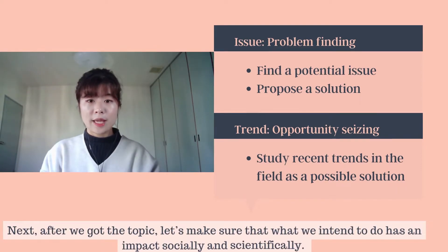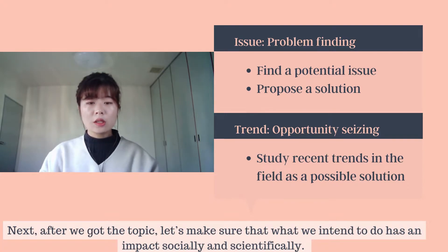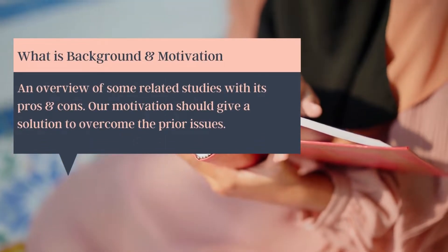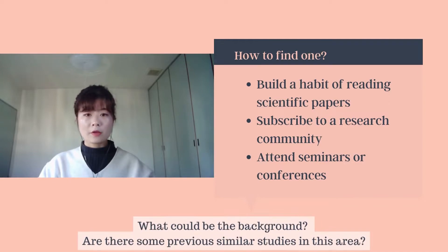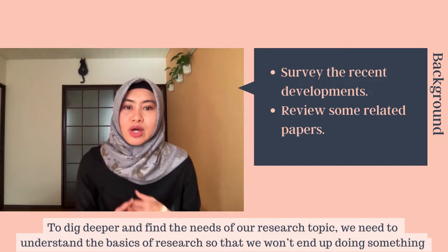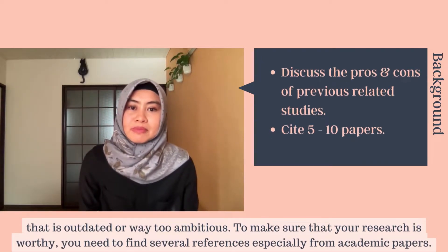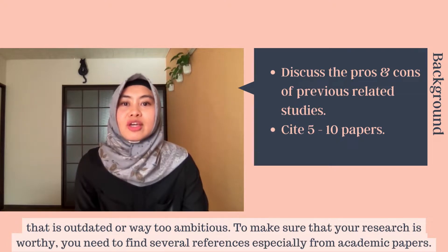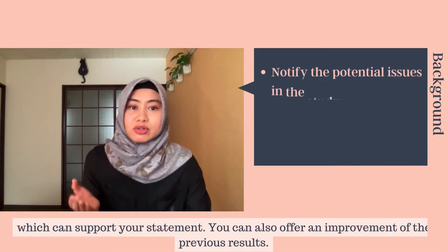After we get a topic, let's make sure that what we intend to do has an impact socially and scientifically. What could be the background, and are there some previous similar studies in this area? To dig deeper and find the needs of our research topic, it's important to understand the basics of research so that we won't end up doing something that is outdated or way too ambitious. To make sure that your research is worthy, you need to find several references, especially from academic papers, which can support your statement.